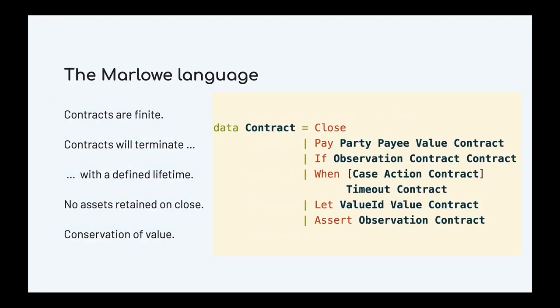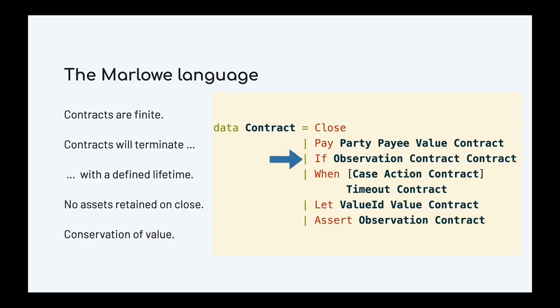What does the language look like? Marlowe is, at heart, represented as a Haskell data type. We have a Pay construct where a party makes a payment to a payee of a particular value, and then the contract continues with what we call a continuation contract. We can also go in two separate directions using an If construct — we observe whether a particular observation is true or not; if true we follow the first contract, if false we follow the second.